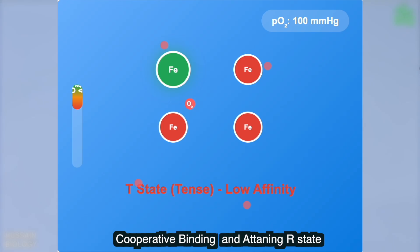Once the first O2 binds, it triggers a conformational change. This shifts hemoglobin into the R state (relaxed state), which has high affinity for oxygen. Now the remaining heme sites fill rapidly. This is cooperative binding.